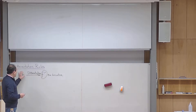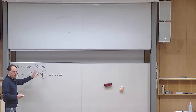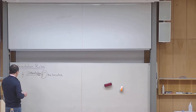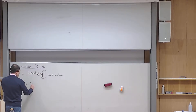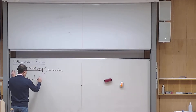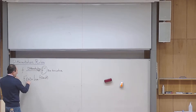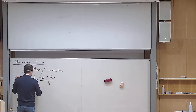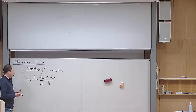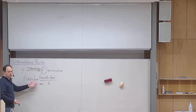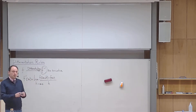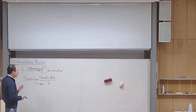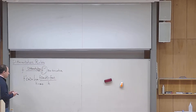Our lesson started last session: how can we go from a function f to its derivative? The answer is extremely simple but formidable and tedious. If I give you f and ask you to find f prime, there is only one way — to use the definition of the derivative, changing the letter a to letter x.